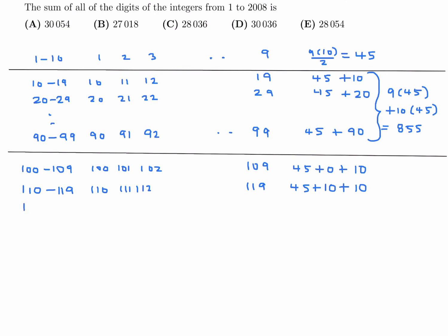And then similarly for 120 to 129, this gives me 45 for the units digits. It gives me 20 this time for the tens digits because it's all 2s and there's 10 of them. So 2 times 10 is 20. And then for the hundreds digit, it's still 10. And then dot, dot, dot. I'll just jump to the 190s. 190 to 199. Units digits, 45. Tens digits give me 90. And the hundreds digits give me 10.